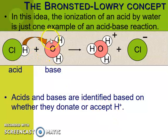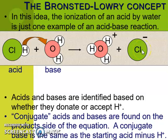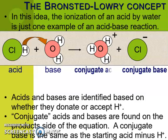We use the term 'conjugate' to describe these pairs — a conjugate pair has lost or gained just a single H. Notice how Cl⁻ and HCl look a lot alike, differing by just one H, and the same applies to H₂O and H₃O⁺. On the right side of the equation, from the acid we get the conjugate base, and from the base we get the conjugate acid.